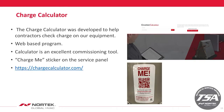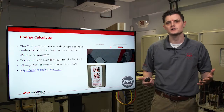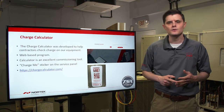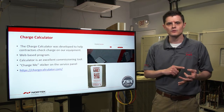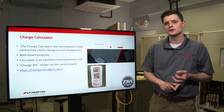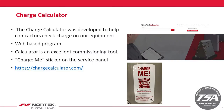Another tool is our charge calculator, developed to help contractors check charge on our equipment. It's a web-based program and an excellent commissioning tool for contractors in the field during a startup—helping determine whether they need to add or remove charge based on their install. You can access it two ways: via the 'Charge Me' QR sticker on the service panel of the equipment, or by going directly to chargecalculator.com.